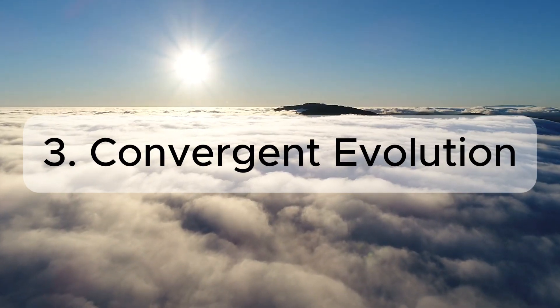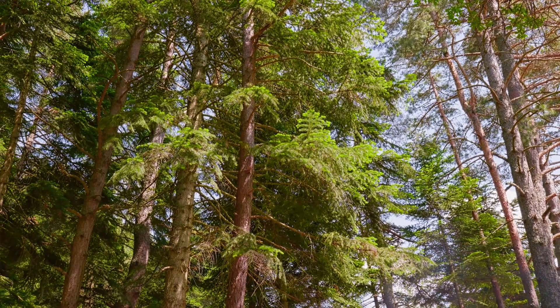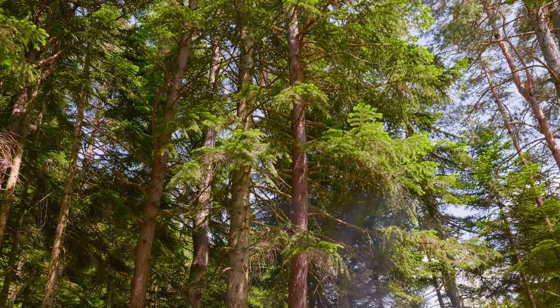Another piece of evidence is convergent evolution, which produces analogous structures, showing the predictive nature of natural selection. Take the sugar glider and the flying squirrel — these two species do share a common ancestor, but that ancestor did not have the gliding flaps underneath its arms. Rather, those features evolved independently in both species due to similar pressures of their arboreal environments. The flaps would be considered analogous structures because, unlike homologies, they are not from the same source but evolved independently.